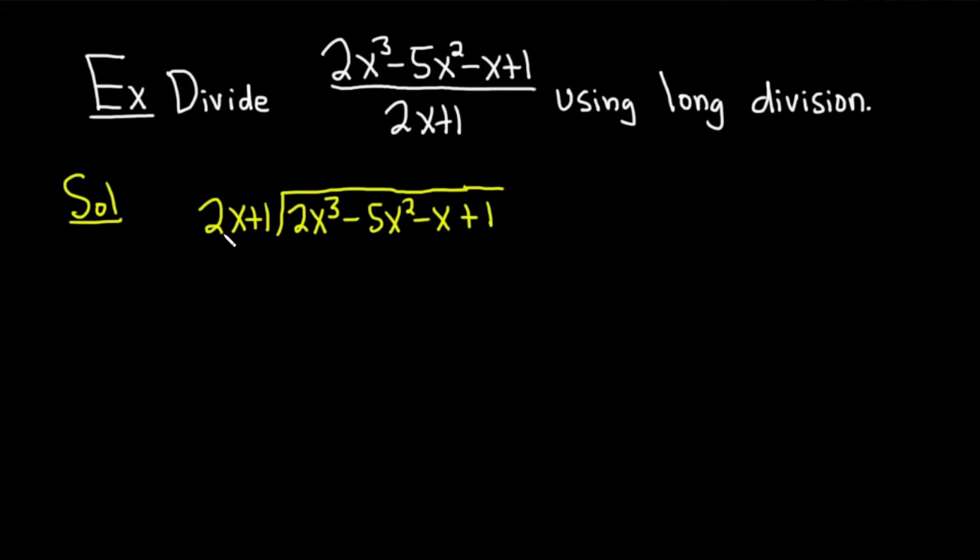Now you ask the question, what do you multiply by 2x in order to get 2x³? Well, x². So you put it above the x² term. And you should check because x² times 2x is 2x³. So it does work. And now you actually do that. You perform the multiplication. x² times 2x is 2x³. x² times 1 is x². Then you draw a line. And then you're supposed to subtract.